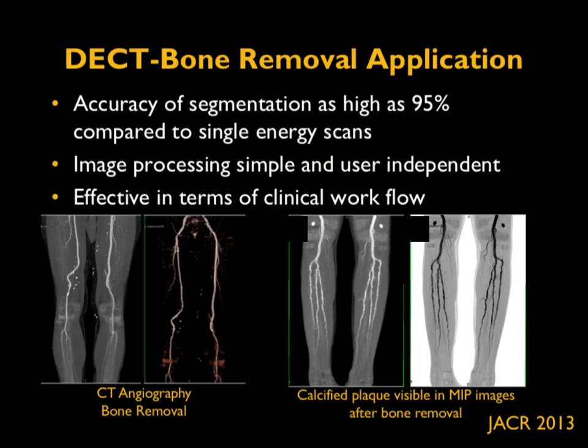One example where dual energy CT is quite advantageous and routinely used is the bone removal application. The accuracy of segmentation is reported as high as 95 percent compared to single energy CT. The image processing is simple and user-independent, making it very effective clinically and therefore used routinely to some extent.